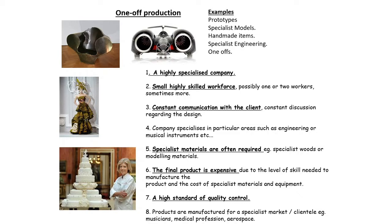The company will specialise in that particular thing — wedding cakes, specialist furniture, musical instruments. There's a difference between a generalist who can make an okay version of most things in a field, and a specialist who focuses on one specific thing. Specialist materials are often required; for bespoke furniture you wouldn't use MDF or chipboard, you'd use higher quality materials. Because you're paying for a highly skilled person and good quality materials, the final product will be a lot more expensive — you get what you pay for.